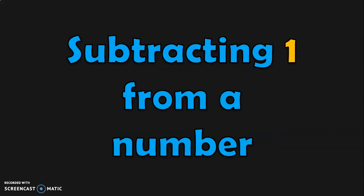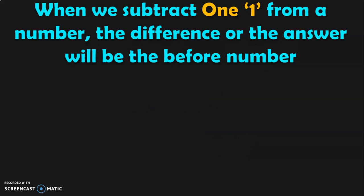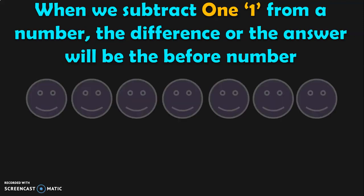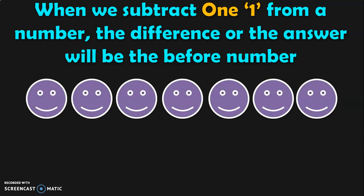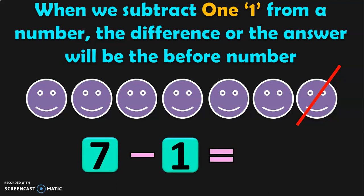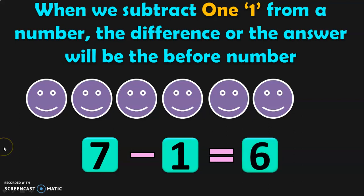Let us see the next property — subtracting 1 from a number. When we subtract 1 from a number, the difference or the answer will be the before number. You have 7 buttons with you. 1 button fell down and rolled away. What is the remaining number of buttons? 7 minus 1 — counting the remaining buttons: 1, 2, 3, 4, 5, 6. So 7 minus 1 gives you 6. 6 is the number which comes before 7. When we subtract 1 from a number, the difference will be the before number.